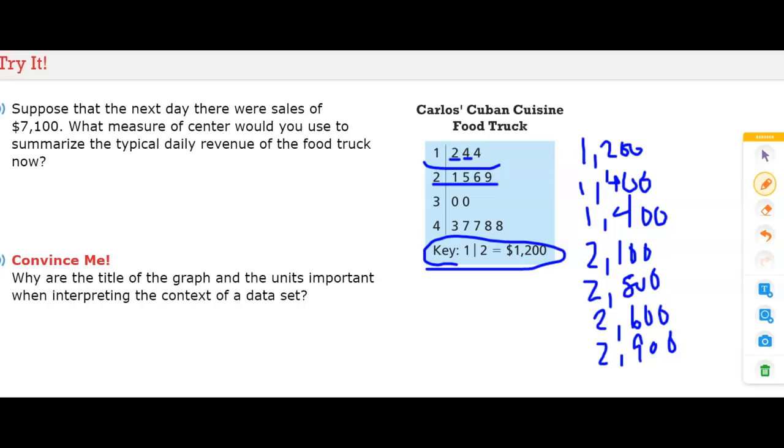So now we can go back to answering the question. It says, what measure of center would you use to summarize the typical daily value revenue of the food truck now? That means they've added this 7,100. That means if I were to add to my data here, now I have a 7 in my stem and leaf plot and a 1. That means 7,100.